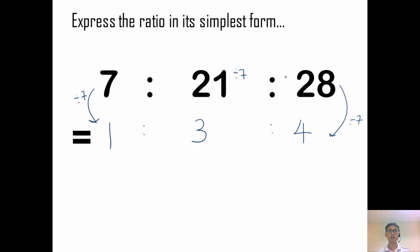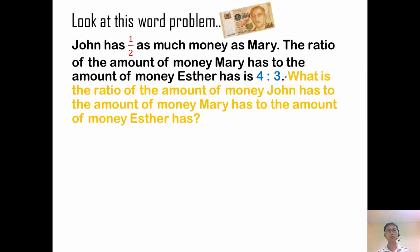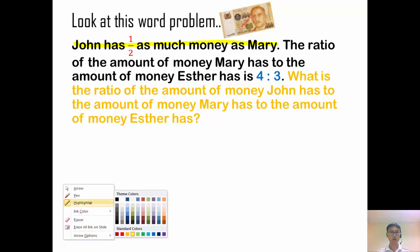So those are the easy parts. Let's look at a little bit more challenging word problem. So now John has half as much money as Mary. The ratio of the money that Mary has to the amount that Esther has is 4 is to 3. So then what is the ratio of the amount of money that John has to the amount of money that Mary has to the amount of money that Esther has? So I need to combine all 3 together. So first things first, what are we comparing? So let's look at the first statement. First statement, John has half as much money as Mary.